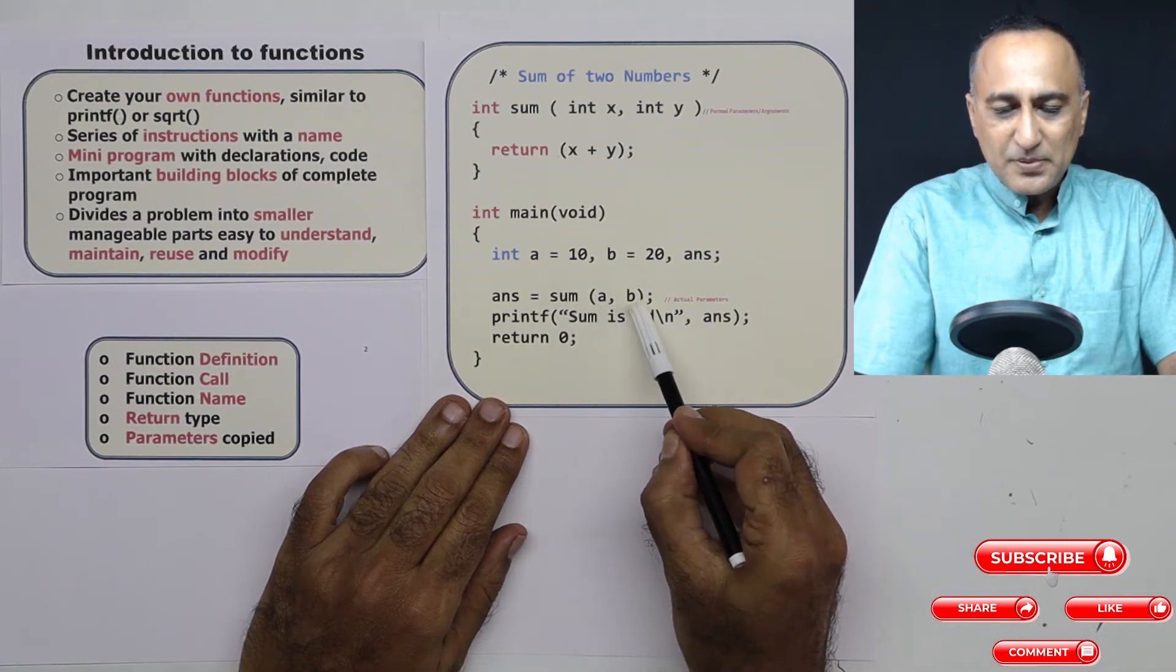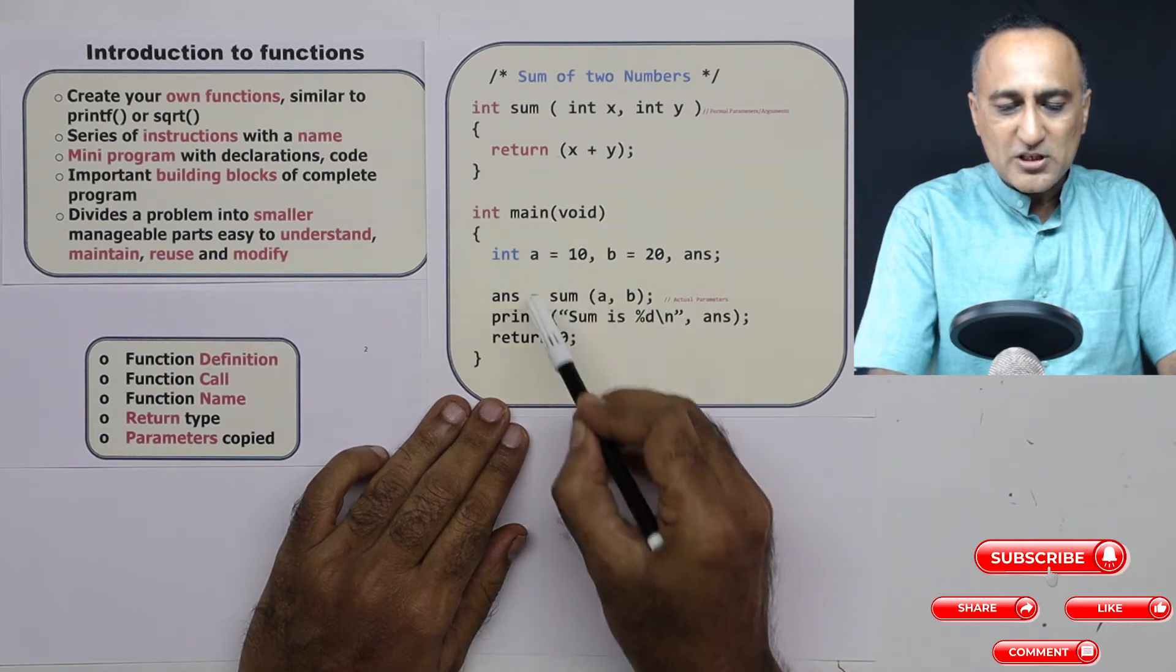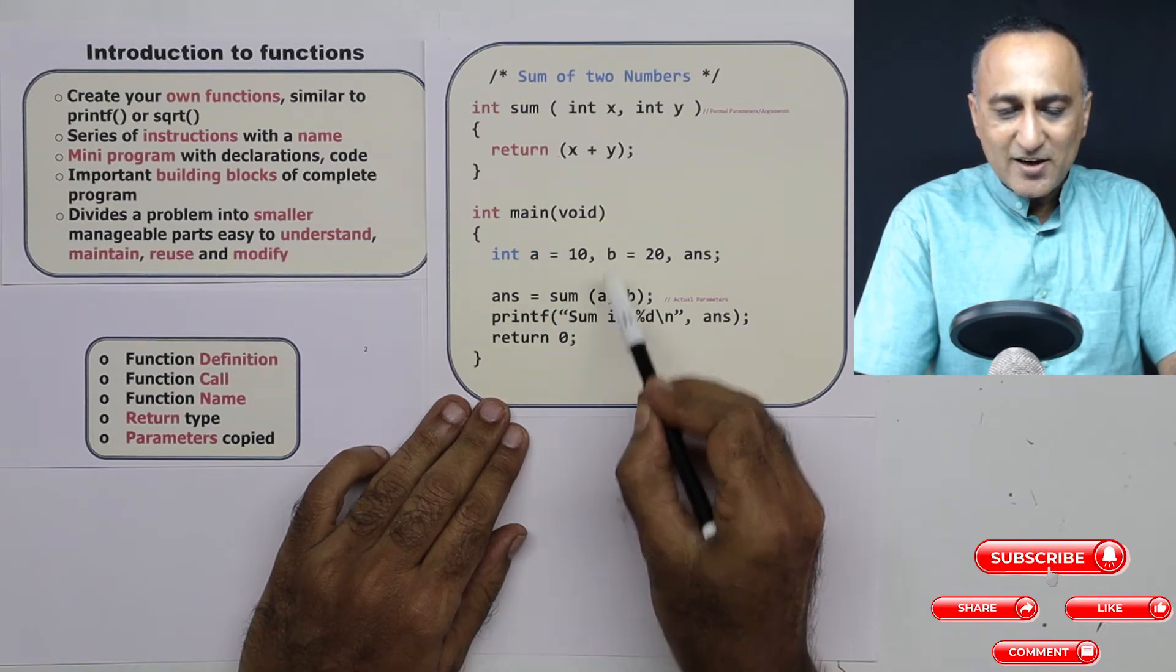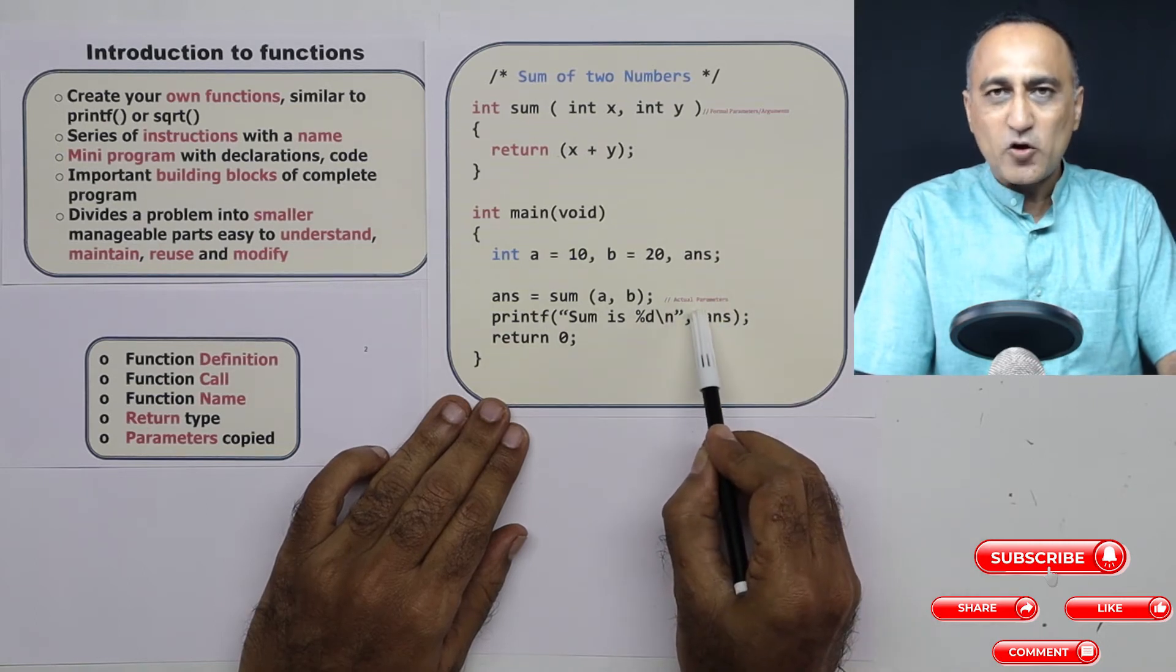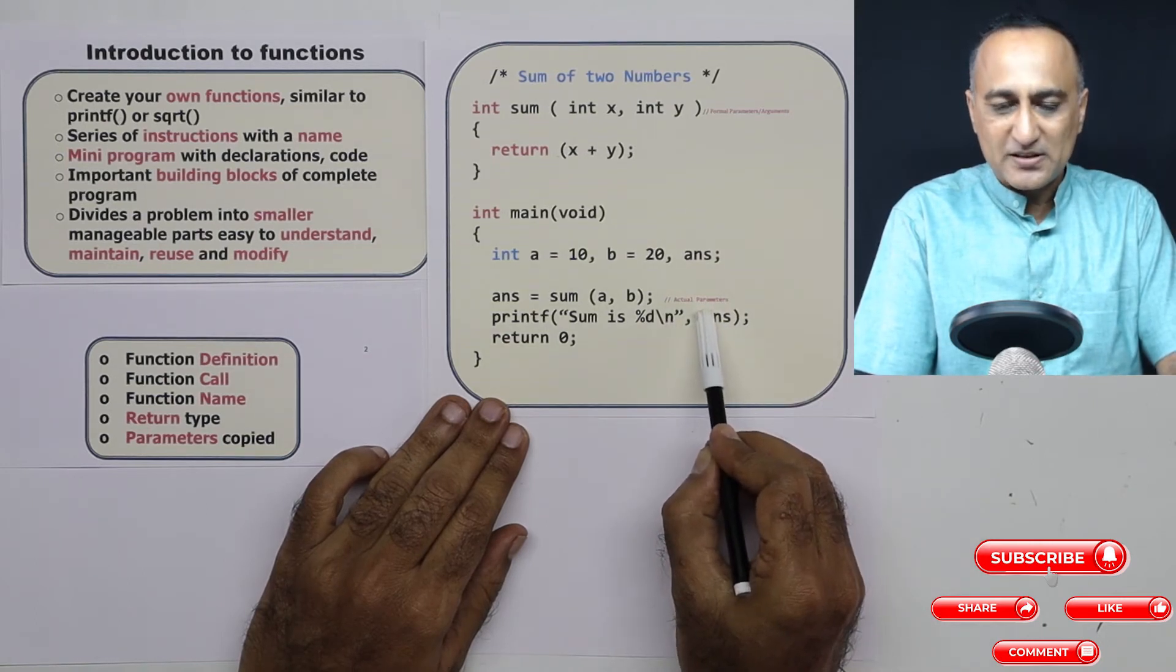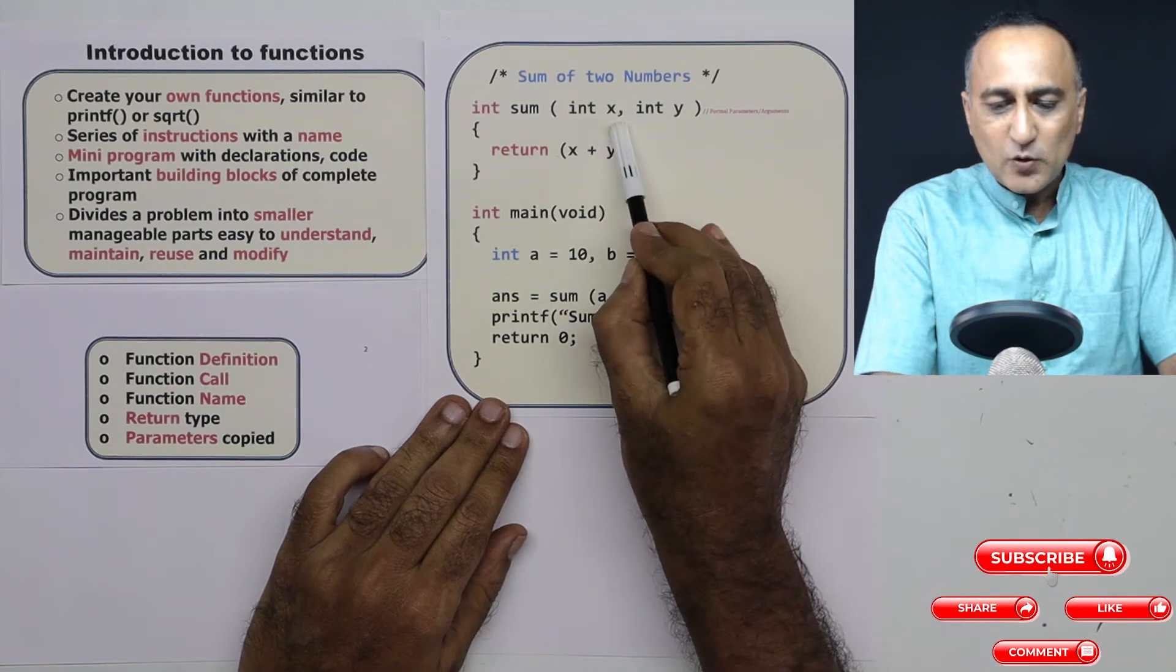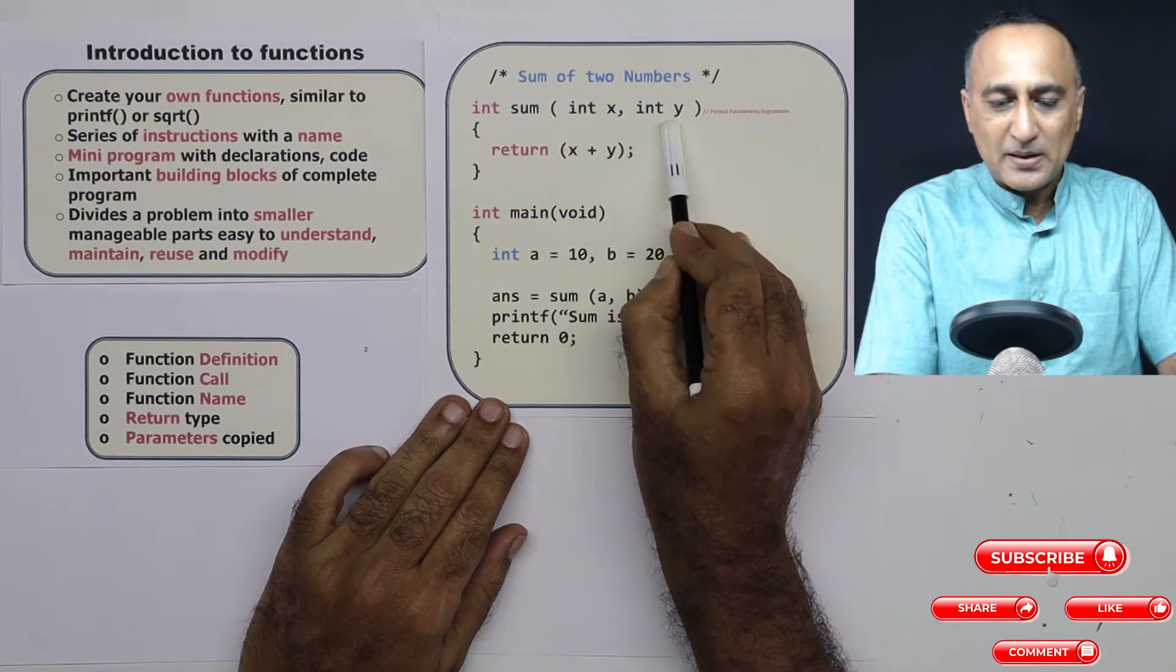Now the a and b here which are used in main to send the values to x and y respectively, these are known as the actual arguments or actual parameters. X and y are known as the formal arguments or formal parameters.